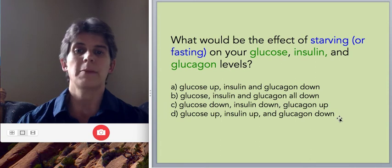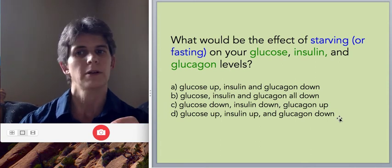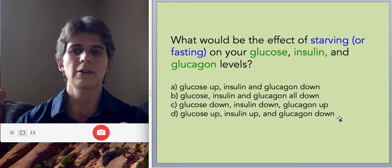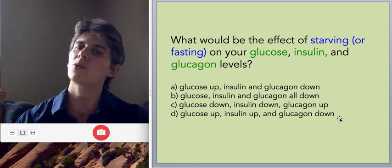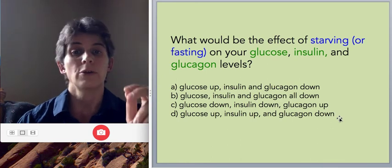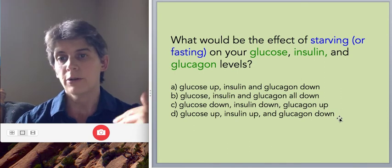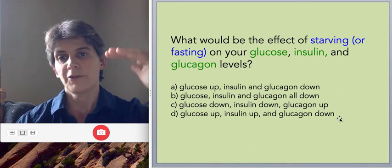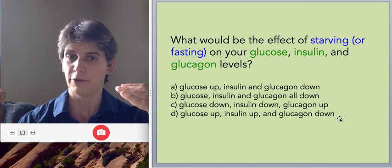So the first thing you need to think about is what happens to glucose. And the reason you always start with glucose is because insulin and glucagon don't really pay any attention to each other. Each one is only thinking about what glucose is doing. So if, of course, you're not adding glucose into your body, your glucose level begins to drop in your blood, so the glucose level should go down.